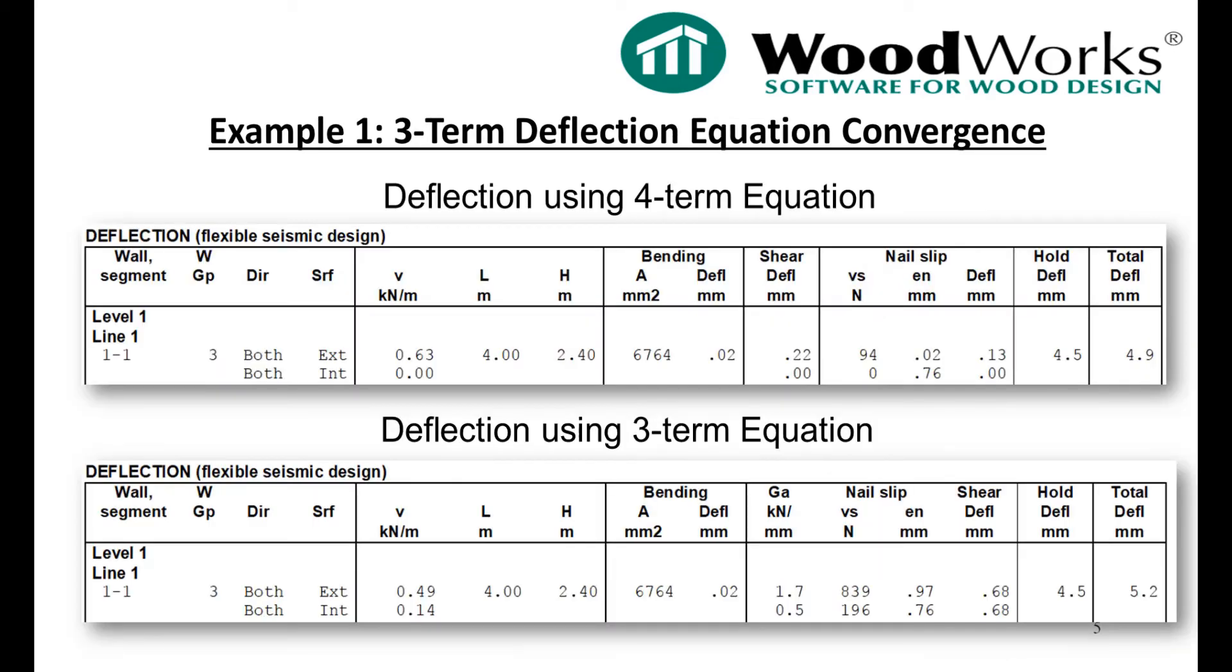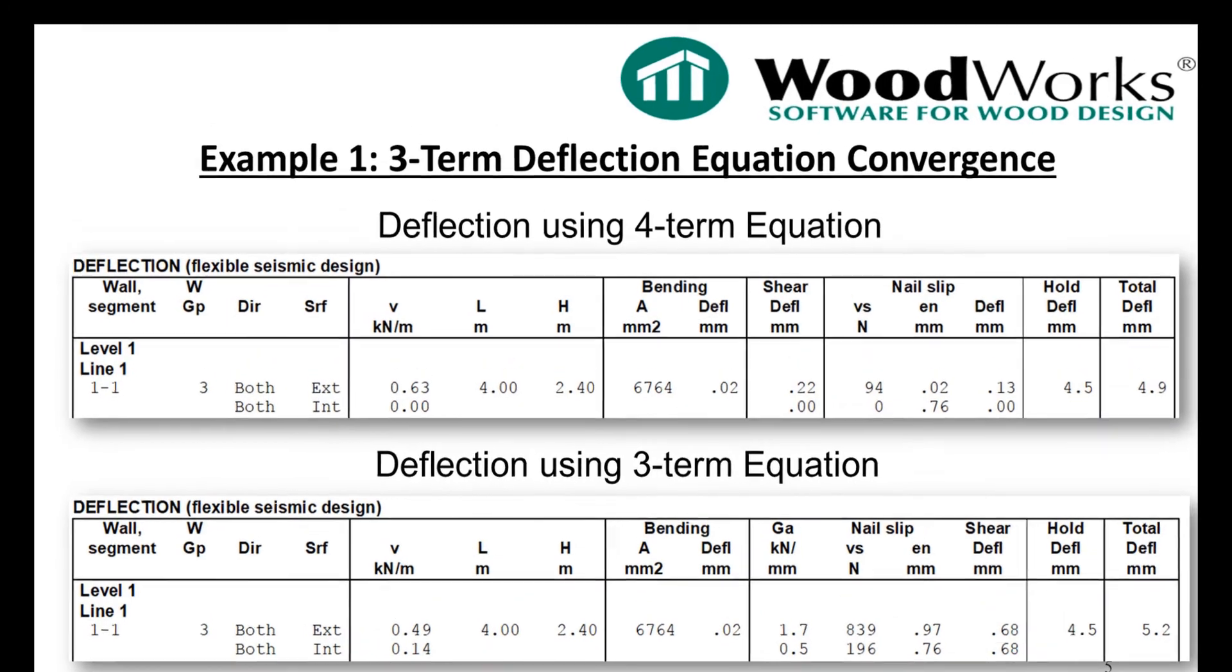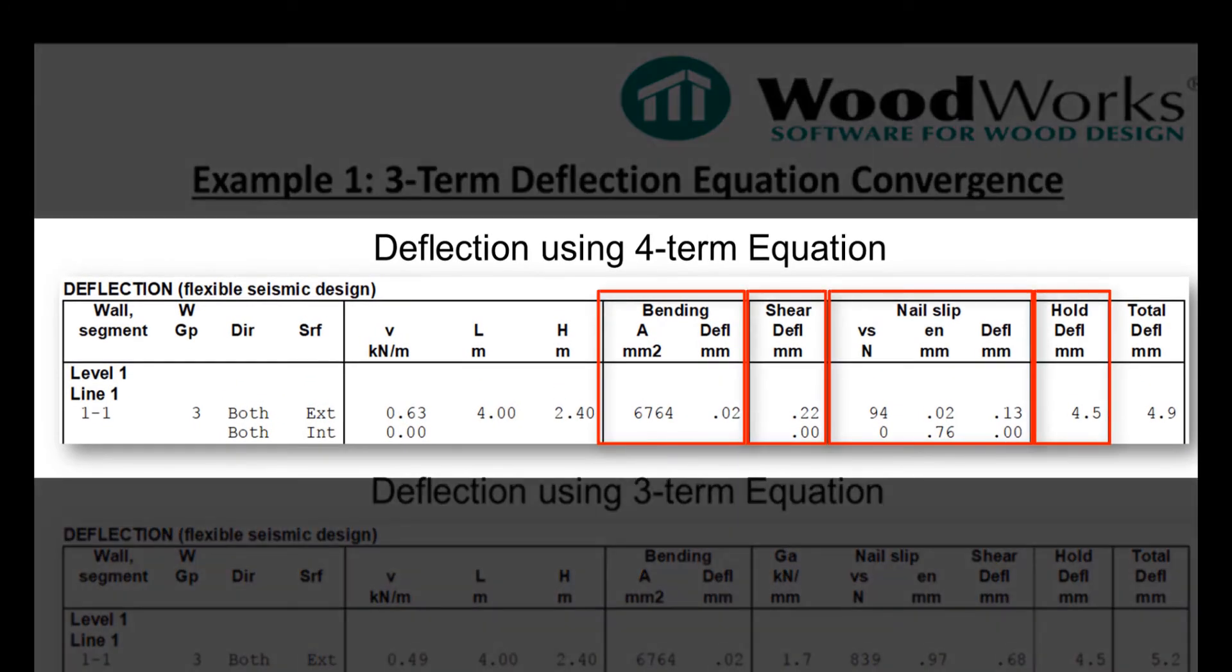This slide compares the deflection results using the four-term and three-term deflection equations. Notice that for the four-term equation, no load is distributed to the gypsum wallboard on the interior side. Why is this? Well, the software is programmed to equalize the deflection between the exterior and interior sheathing materials. Out of the four terms of the equation, the only terms that vary by the shear force are the shear and nail slip components.